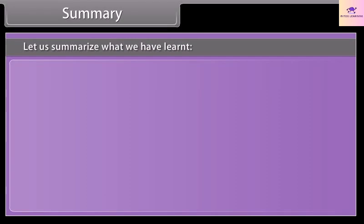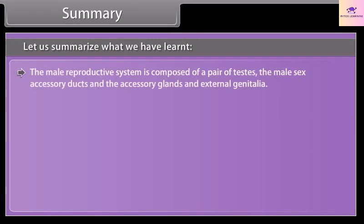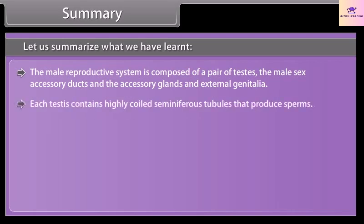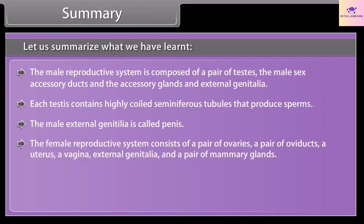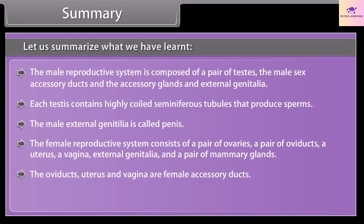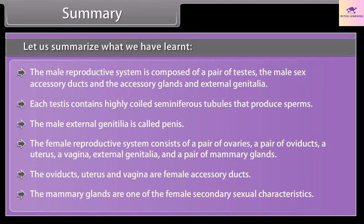The male reproductive system is composed of a pair of testes, the male sex accessory ducts, the accessory glands, and external genitalia. Each testis contains highly coiled seminiferous tubules that produce sperms. The male external genitalia is called the penis. The female reproductive system consists of a pair of ovaries, a pair of oviducts, a uterus, a vagina, external genitalia, and a pair of mammary glands. The oviducts, uterus, and vagina are female accessory ducts. The mammary glands are one of the female secondary sexual characteristics.